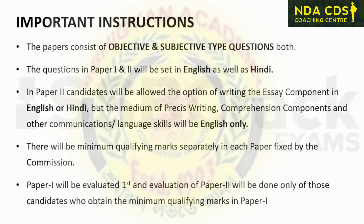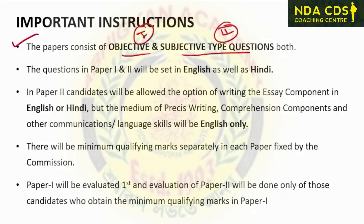Some important instructions: the paper consists of objective and subjective type questions. Questions in Paper 1 and Paper 2 will be bilingual, in English as well as Hindi. In Paper 2, candidates will be allowed to write essays in English or Hindi, but precise writing, comprehension, and other communication and language skills questions will be in English only. There will be minimum qualifying marks separately for each paper. Paper 1 will be evaluated first, and Paper 2 will be evaluated only for those candidates who obtain minimum qualifying marks in Paper 1.